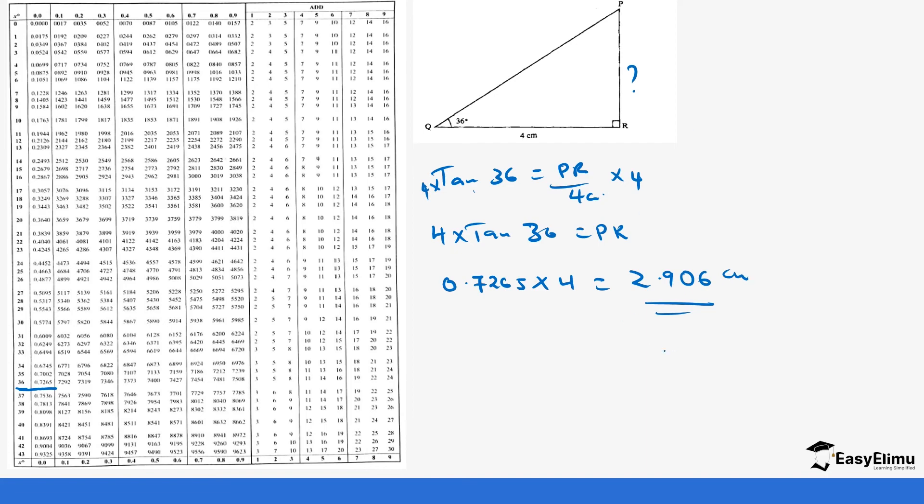Sometimes you could be told to one decimal place or to a whole number. If it's to a whole number it's going to be three centimeters, but I would advise you to put your first value before you round off or truncate. And if you are not told so, you can leave your answer in decimal place.